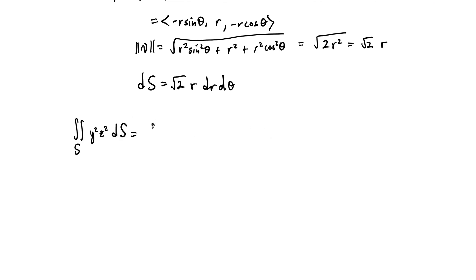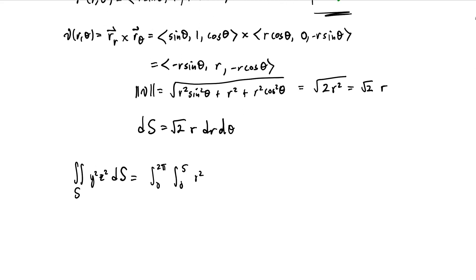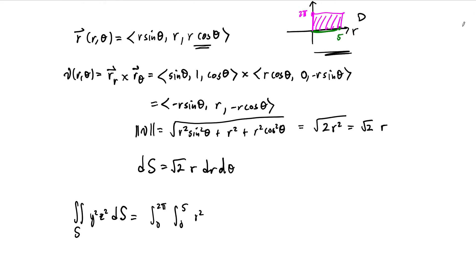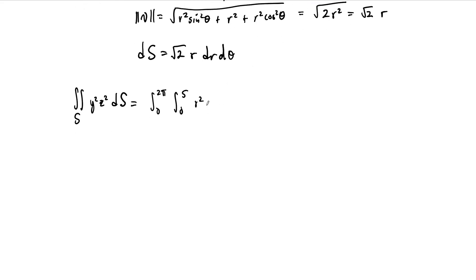So this tells us then, double integral over s of y squared z squared ds. This is going to be equal to integral from 0 to 2 pi, integral from 0 to 5 of y squared—that's just r squared. z squared, that is r squared times, go back to our z, r squared times cosine squared theta, times ds. ds is all this. So square root of 2 times r dr d theta.